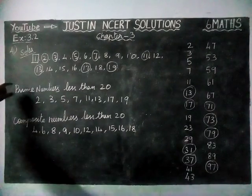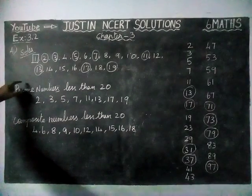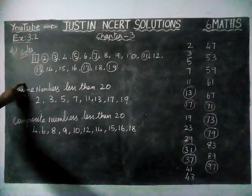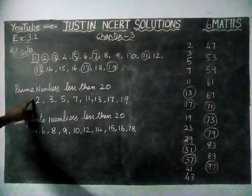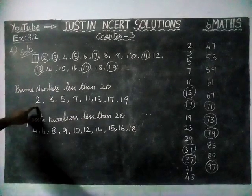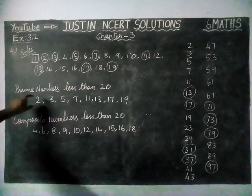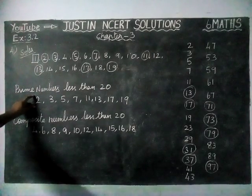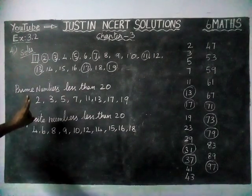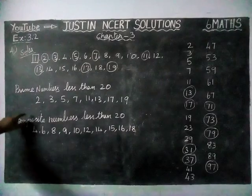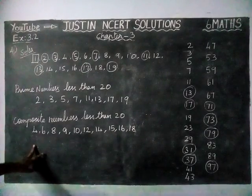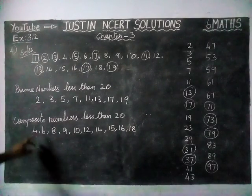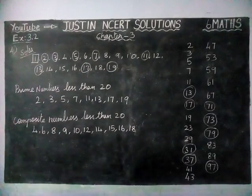The meaning of prime numbers is: only 1 and itself are the factors of the given number — that is called a prime number, and it has only 2 factors. A composite number has more than 2 factors — that is called a composite number.